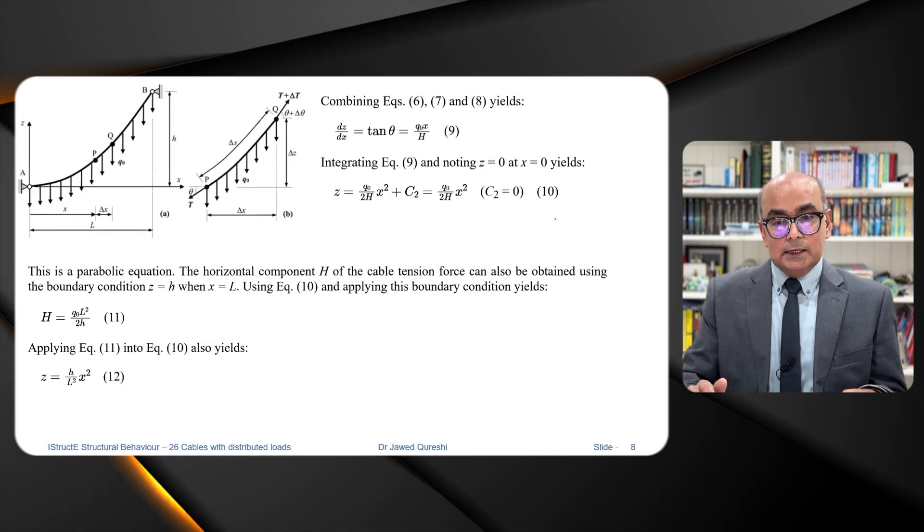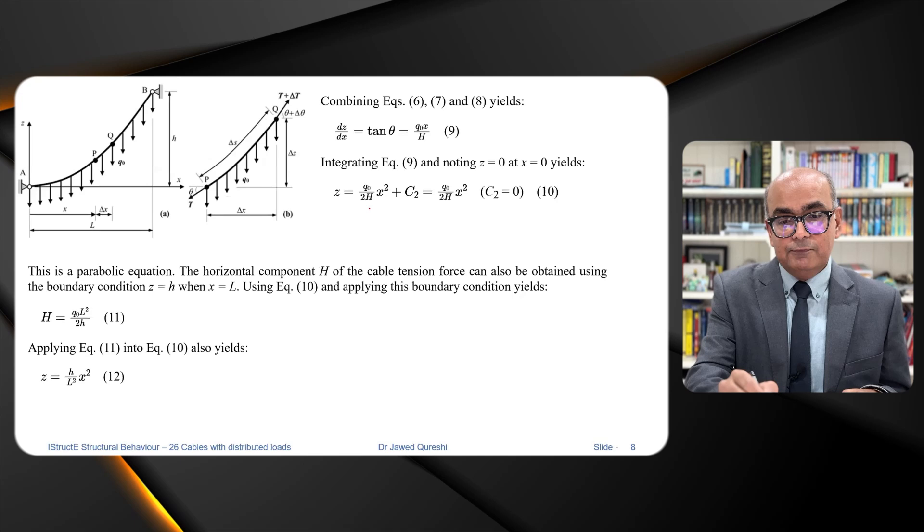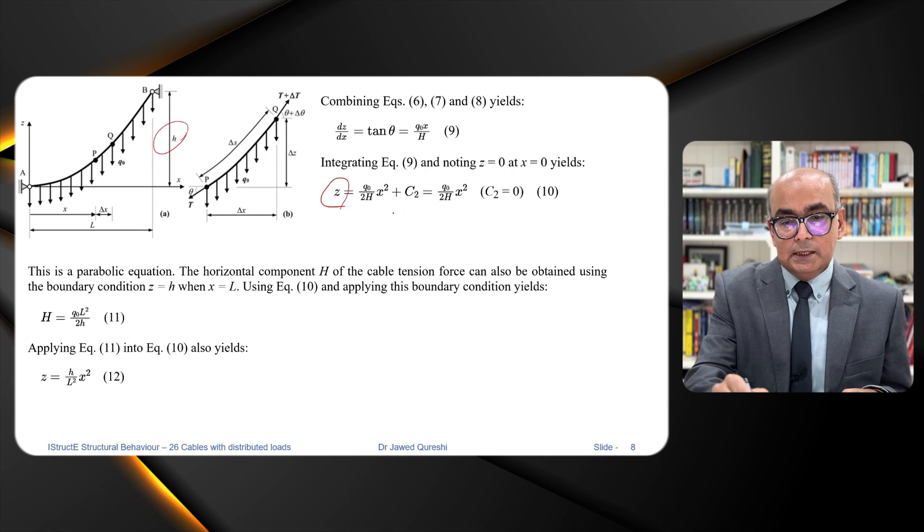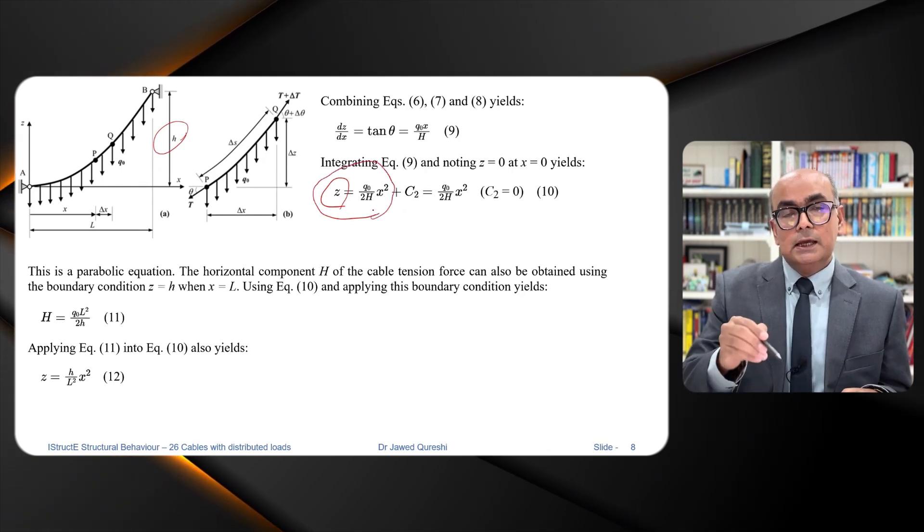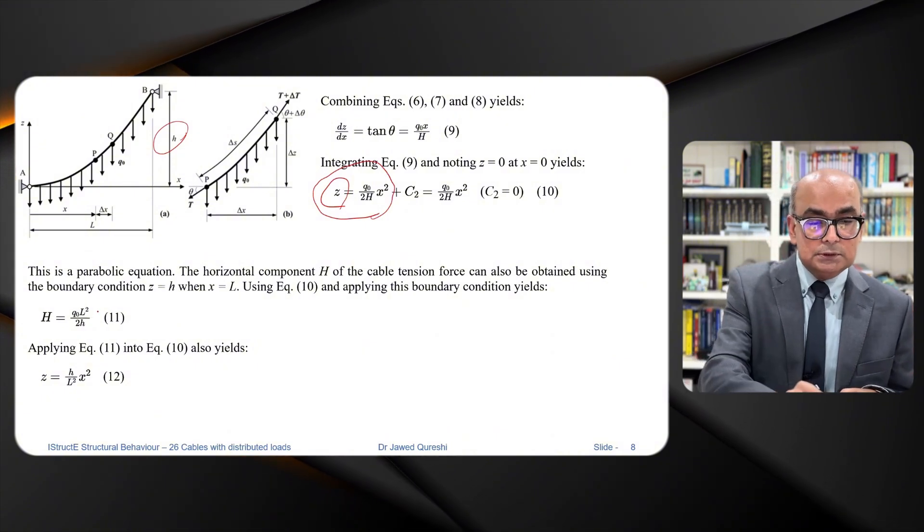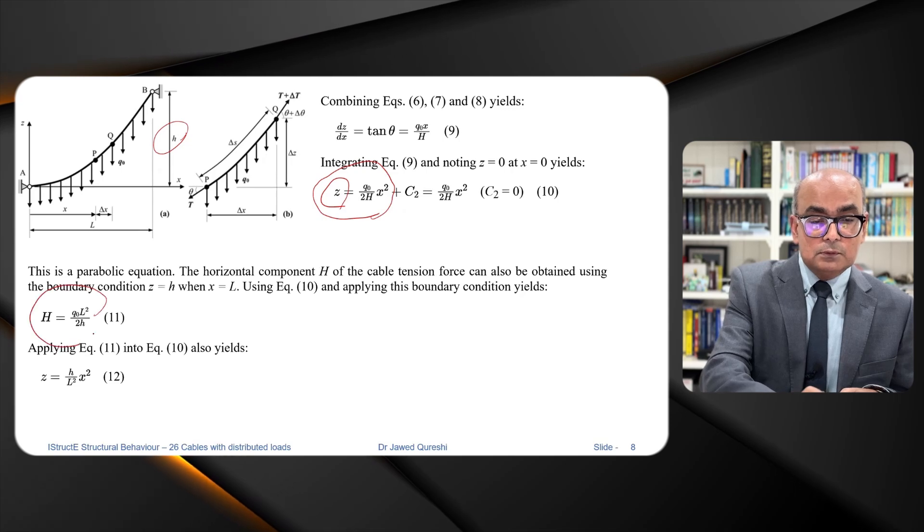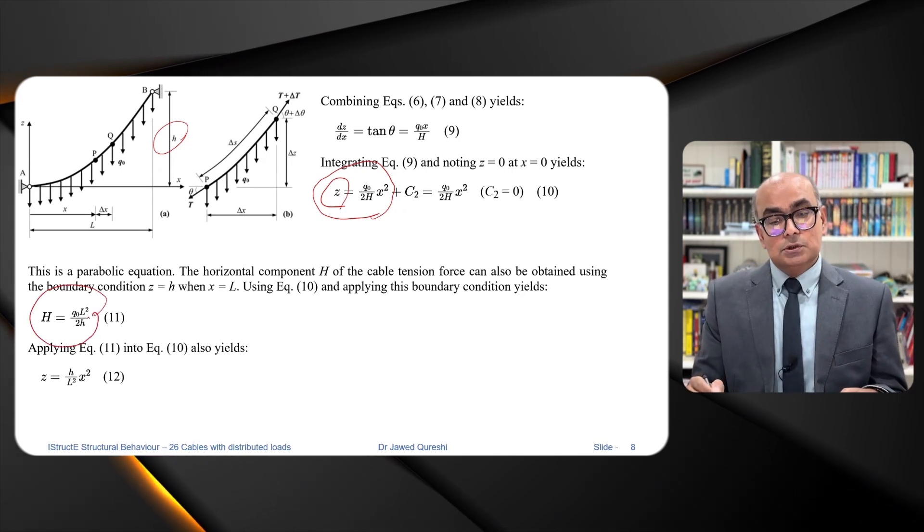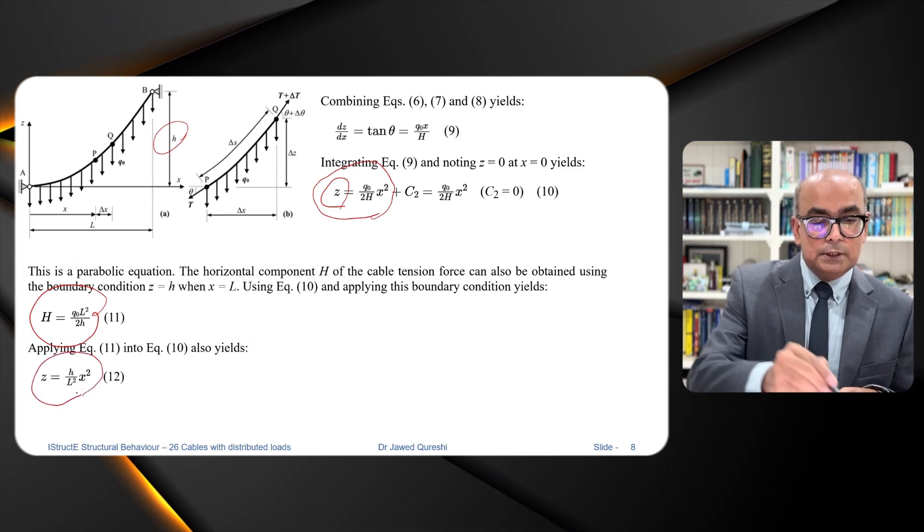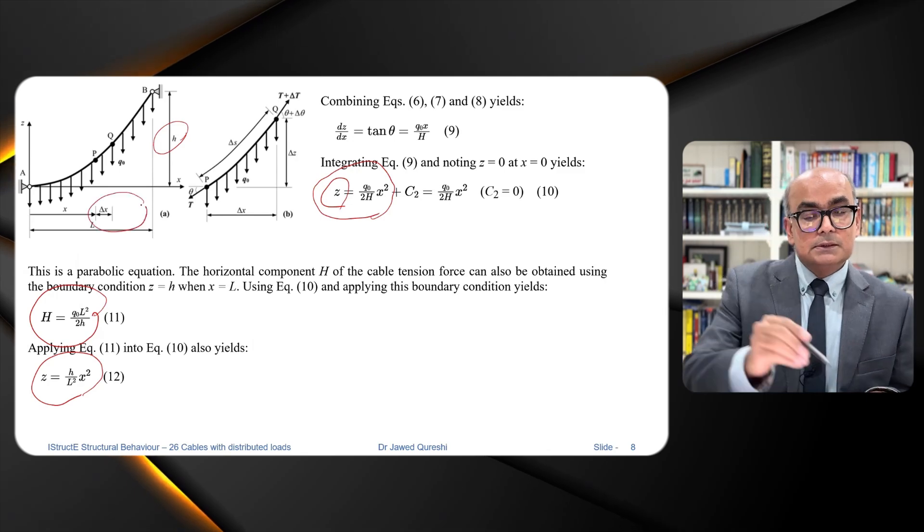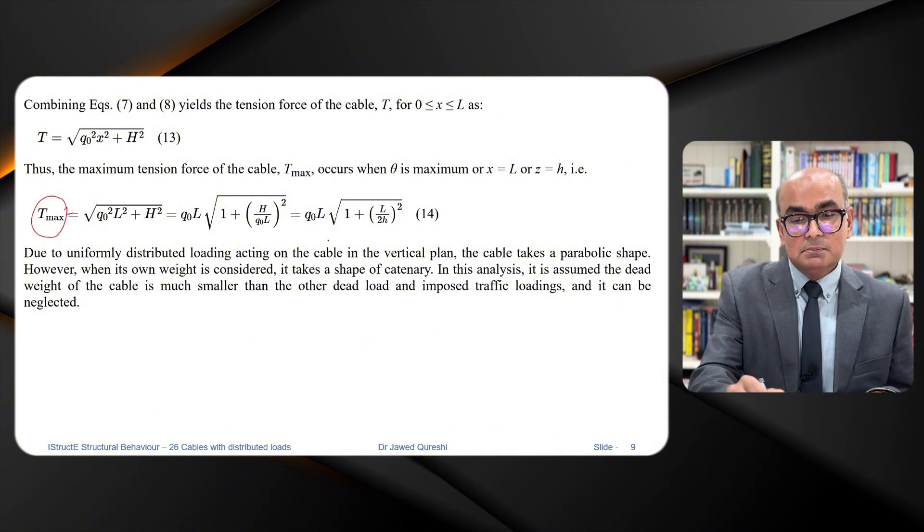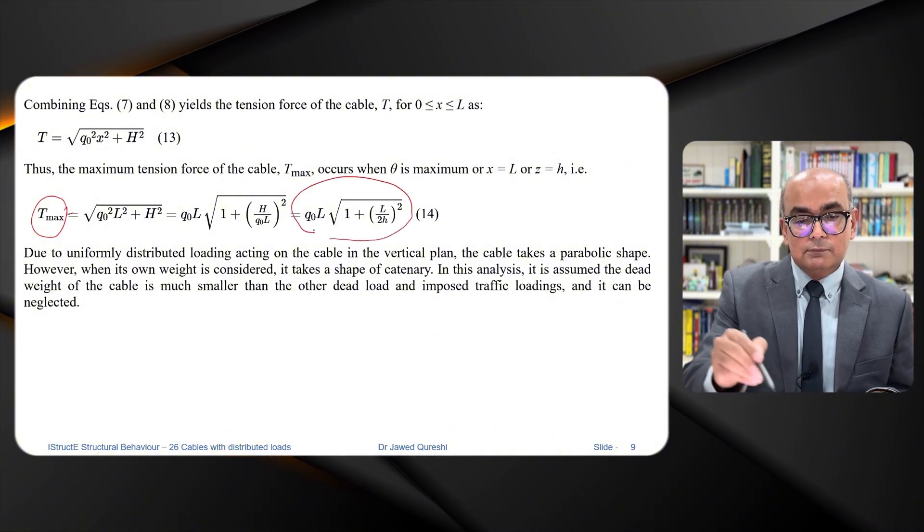And again, using these formula. And finally, we have value of Z, which is the height of the cable as this parabolic equation. And this parabolic equation is something that we are going to use. And if you have to find out the horizontal force or reaction, then you can use this formula. And we also have this formula as well that we will use to find out the distance. And also, if you want to find out the tension max, then you have this formula.